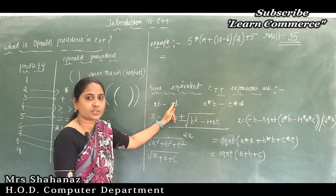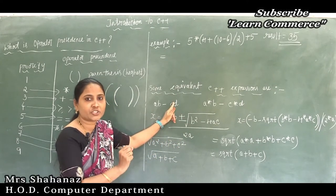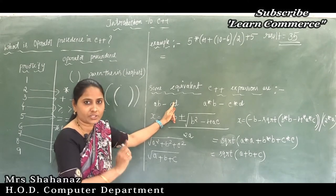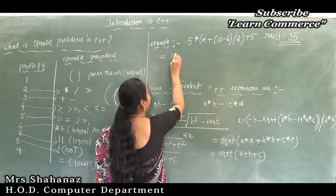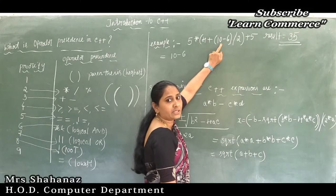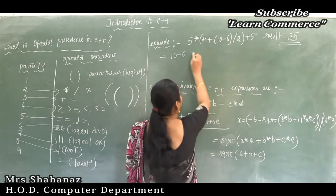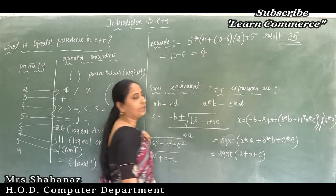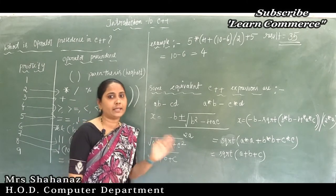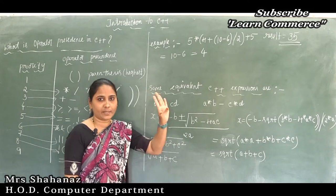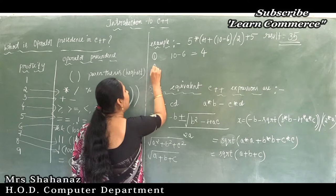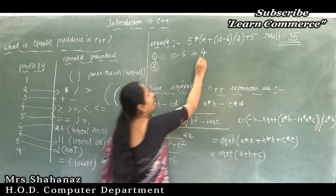First, we take the innermost parentheses value: 10 minus 6. The result of this expression is 4.